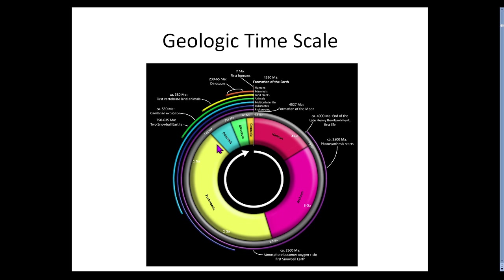Prior to the Phanerozoic, from about 12:01 a.m. to 10 o'clock at night on the clock scale, you're looking at very, very simple life forms. Life kind of popped out at about 4 billion years ago — very simple single cell organisms. For almost 1.75 billion years you're looking at nothing but single cell organisms.